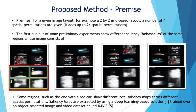There is a premise that needs to be stated: for a given layout, we ran some preliminary experiments. For example, for a 2x2 grid-based layout, a number of 4 factorial spatial permutations are given. Some preliminary experiments show different saliency behaviors of the same regions composing the image. If you look at the left-hand side of the slide, we have a spatial permutation of the given layout and the corresponding saliency map just below. With labels 1, 2, 3, 4, I indicate the corresponding local saliency maps.